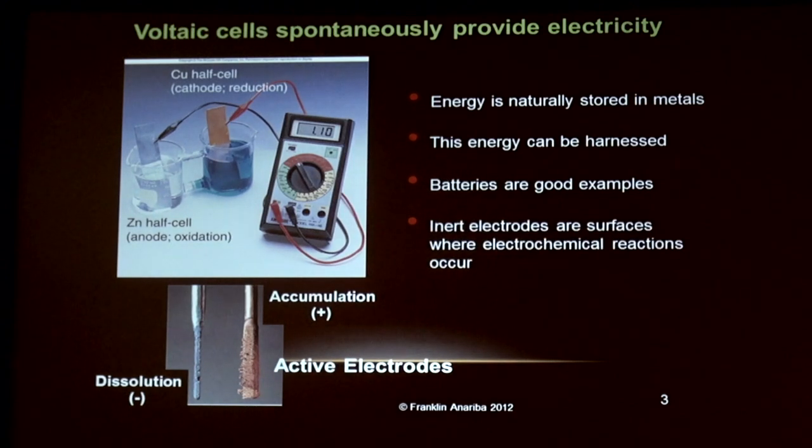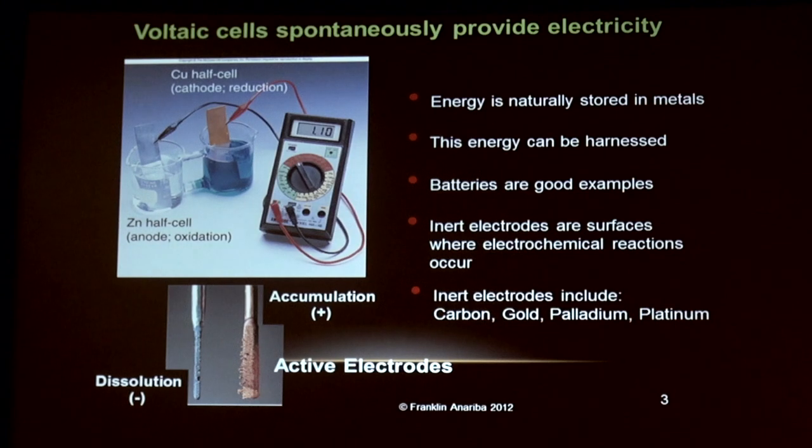Another concept that I want to introduce here in this slide is the idea of having inert electrodes. Here I showed you active electrodes. Actually, the electrode itself actually dissolves and accumulates. And in this particular example here, what I'll say is that you can have electrodes which actually provide only the surface where the electrochemical reaction occurs. Good example of these are carbon, gold, palladium, platinum, for instance, because there are no reactive materials. Right?